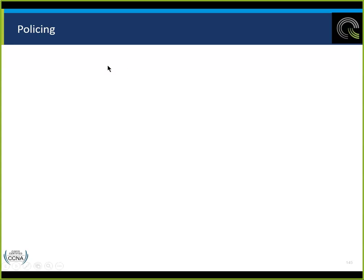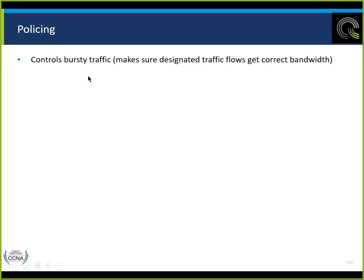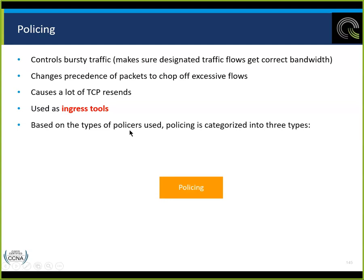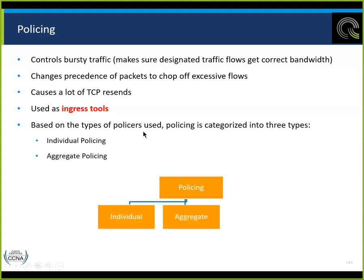Policing controls mercy traffic — it makes designated traffic flows get to the correct bandwidth and changes the precedence of packets to chop off excessive flows. Policing causes a lot of TCP resends because it drops traffic or reclassifies it. It's used on the ingress side. Three types: individual, aggregate, or unconditional priority policing. Policing is a harsh arrangement.